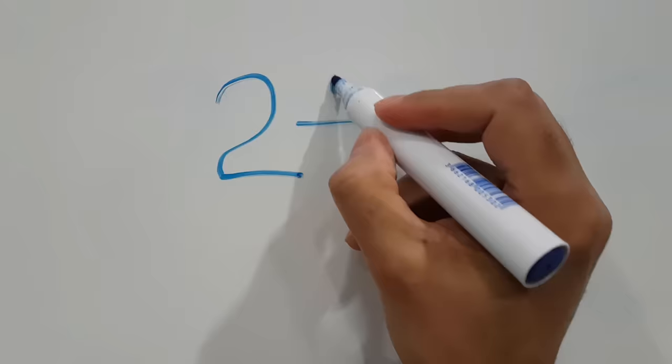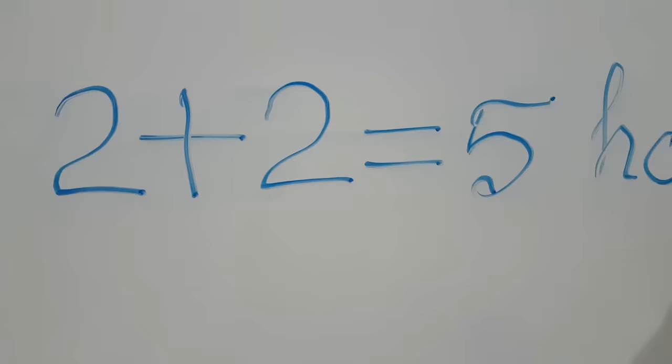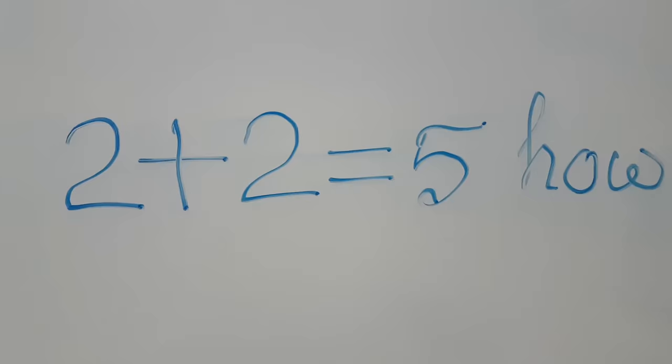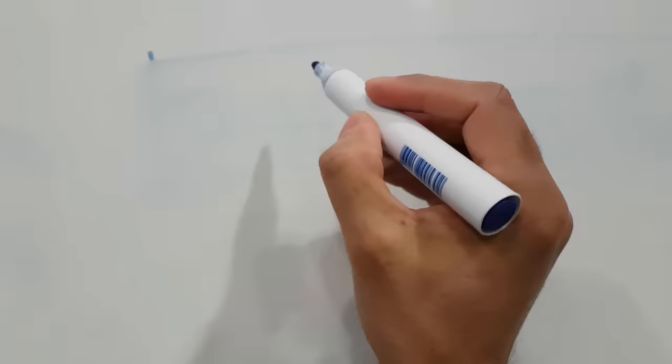Hi everyone, welcome to my new series of videos called 'Fun of Mathematics.' Today is the first video of this series. If I say 2 plus 2 is equal to 5, would you believe that? I think most of you would not believe that, because according to mathematics 2 plus 2 cannot be 5 — it should be 4. But somehow I will break the rules of mathematics and prove that 2 plus 2 is equal to 5.